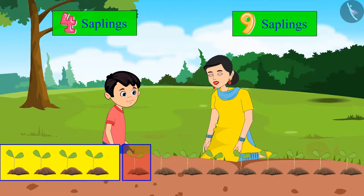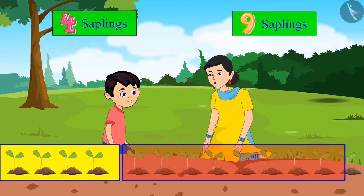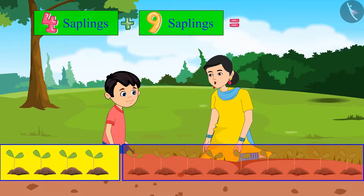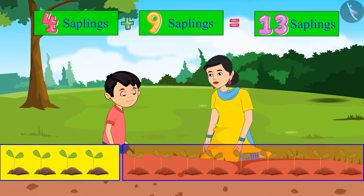This is the sixth, then seventh, eight, nine, ten, eleven, twelfth, thirteenth. That means we planted 13 plants in total.